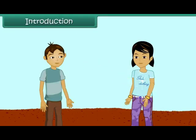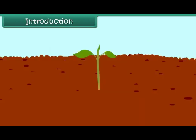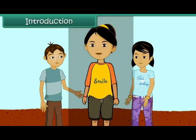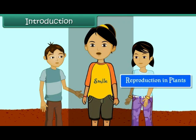Look, Ruchika, there is a new plant arising in the soil. Yes, there are only two small leaves coming up in the soil. Ruchika, do all the plants grow up like this only? No, Rahul, there are many other methods by which plants give rise to new plants. Children, in this lesson, we will learn about how plants reproduce.